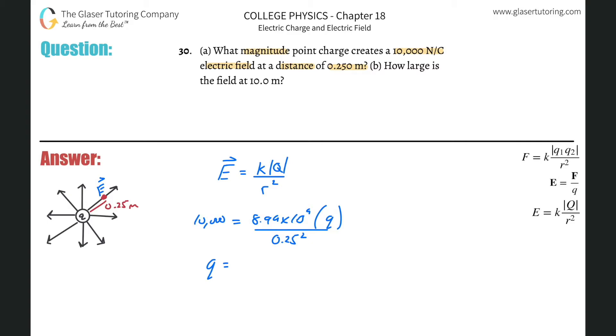And then just solve this bad boy for Q. So this is going to be 10,000 times 0.25 squared, divided by 8.99 times 10 to the ninth. So this becomes 6.95 times 10 to the minus eighth. And that's going to be in terms of coulombs. You can convert that into micro coulomb if you wanted, but that's the value. So that's letter A.